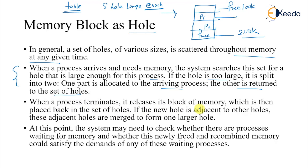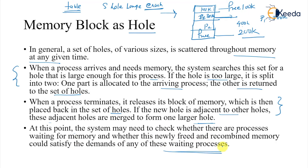When a process terminates, it releases its block of memory back into the set of holes. If the new hole is adjacent to other holes, they can be merged to form a larger hole. For example, if there is already a 100K hole and P1 had been allocated 300K, upon P1's termination we can merge them into a 400K hole. The system then checks whether any waiting process can have its demand satisfied by the newly freed and combined memory.